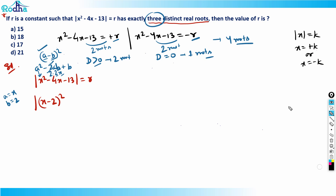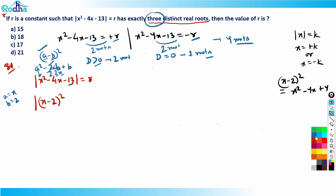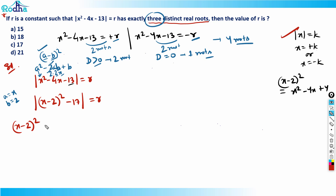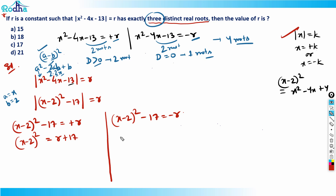Expanding (x-2)² gives x² - 4x + 4, but we have -13 in the original expression. So x² - 4x - 13 = (x-2)² - 17. Thus the equation becomes |(x-2)² - 17| = r. Removing the modulus gives two cases: (x-2)² - 17 = +r, so (x-2)² = r + 17, and (x-2)² - 17 = -r, so (x-2)² = 17 - r.